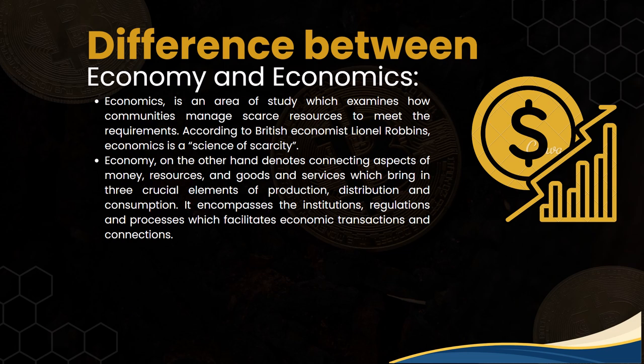Economy, on the other hand, denotes the connecting aspects of money, resources, goods and services, bringing together three elements: production, distribution, and consumption. It encompasses the institutions, regulations, and processes that facilitate economic transactions. To make it simpler, economics is the study of how resources are allocated, while economy deals with how production, distribution, and consumption take place in a nation.